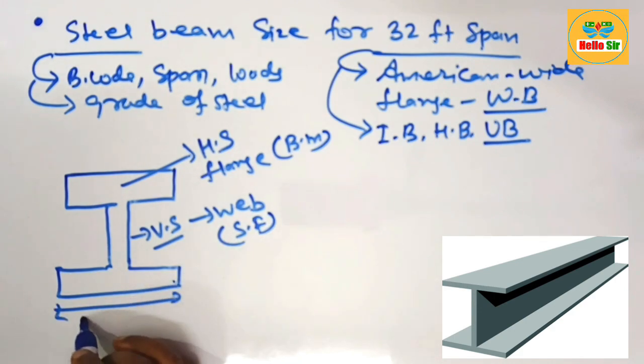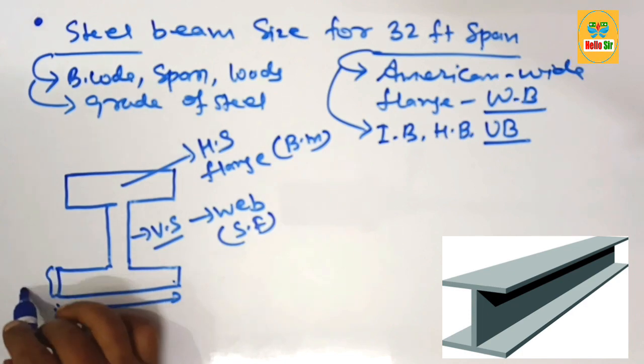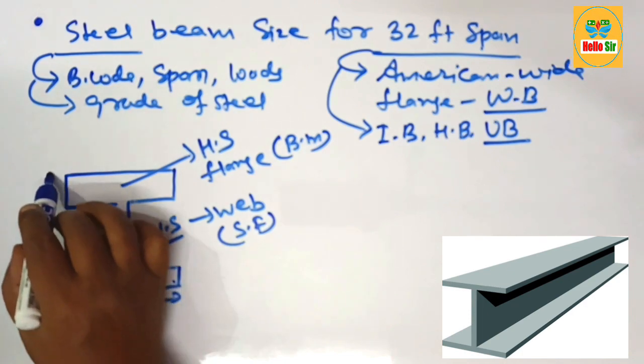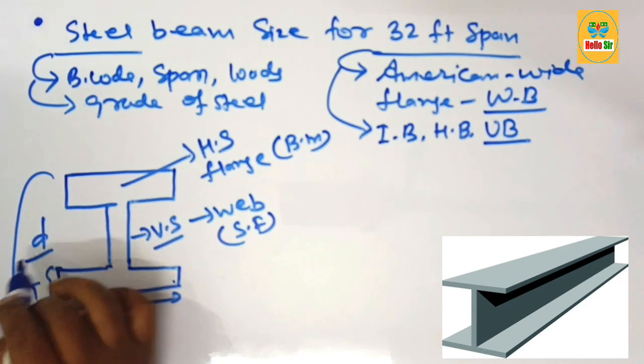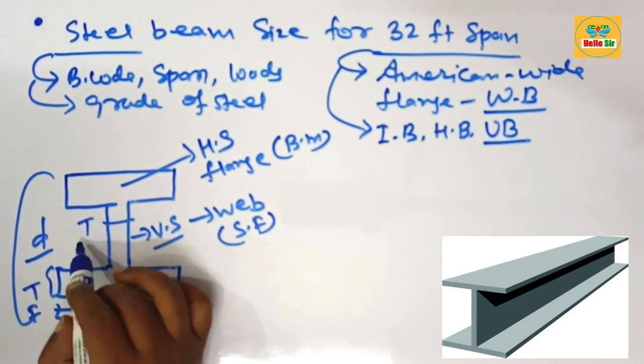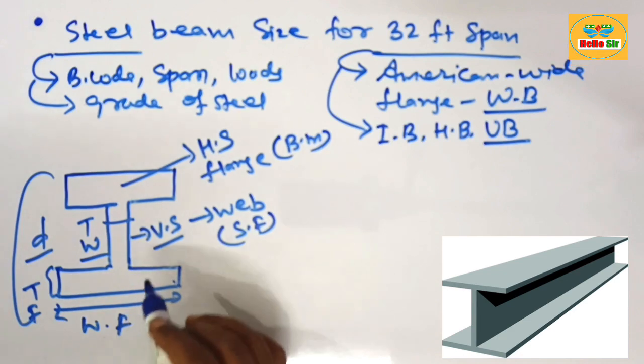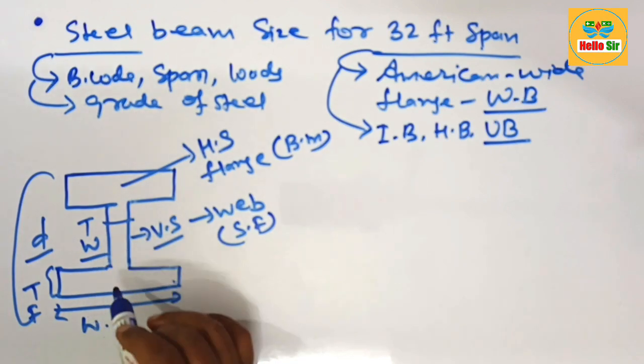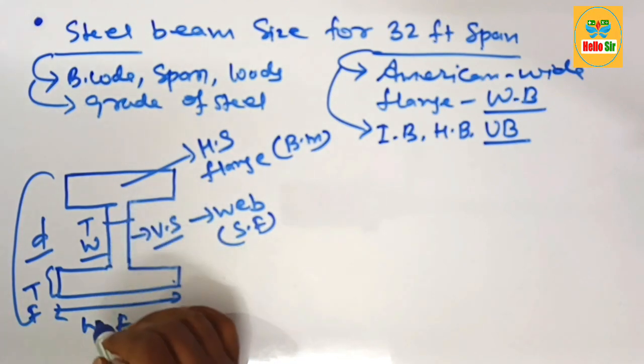This one is width of flange, this is thickness of flange, that is the depth of the beam, and that is thickness of web. These are the major dimensions to understand about the steel beam or American wide flange beam.